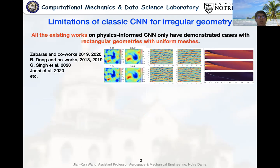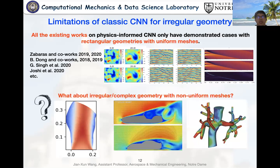All the existing works on physics-informed CNN only have demonstrated on rectangular geometry with uniform meshes. However, in many practical applications, the geometry is very complex and they need non-uniform grids all the time. So, how can we still leverage the CNN for these problems with irregular geometries and non-uniform grids?